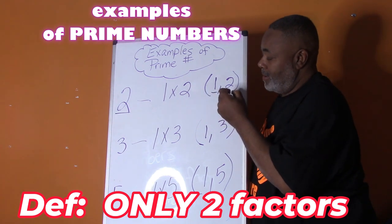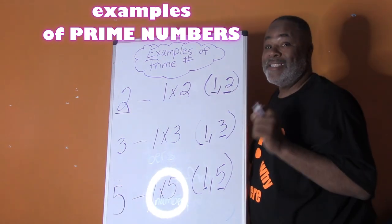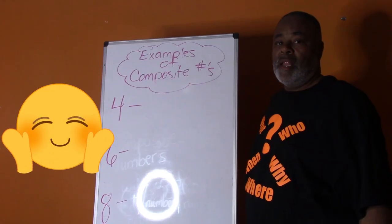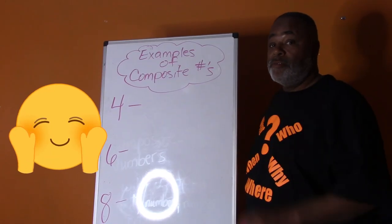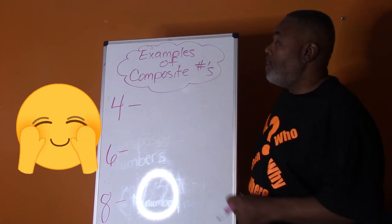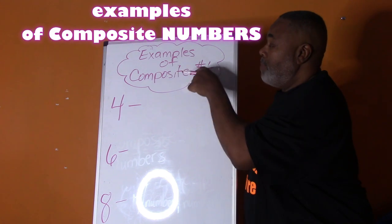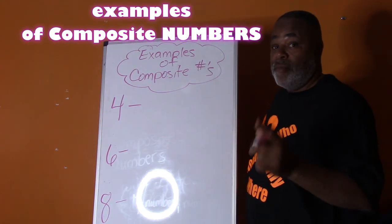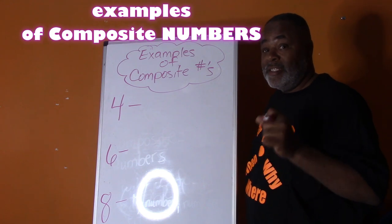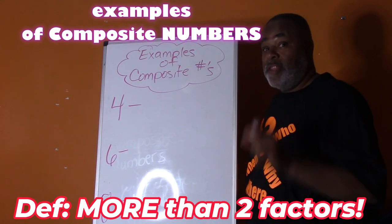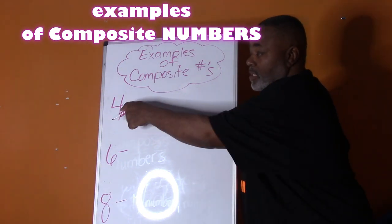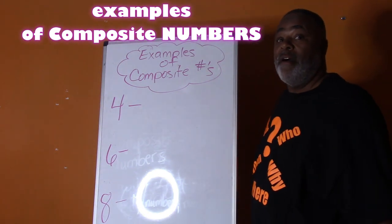Now we're going to talk about examples of composite numbers. Last time we saw examples of prime numbers, and now we move to composite numbers. Remember, a composite number, according to the definition, has more than two factors. So let's see what numbers we can multiply to give us four.